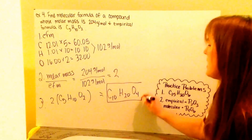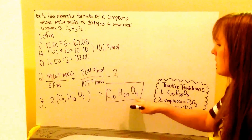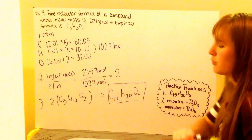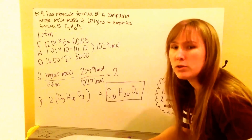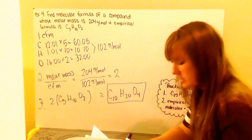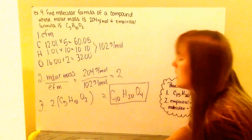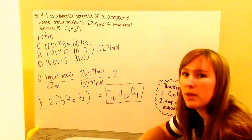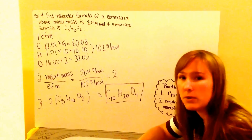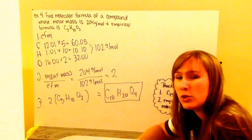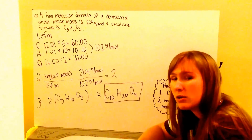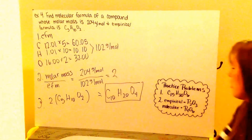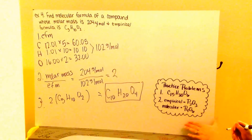And that is my molecular formula, which can be reduced by 2 to go back to my empirical formula. Go ahead now and try your two practice problems to determine both empirical and molecular formula. For the second one, you'll first have to calculate empirical formula and then molecular formula. Your answers are listed here.